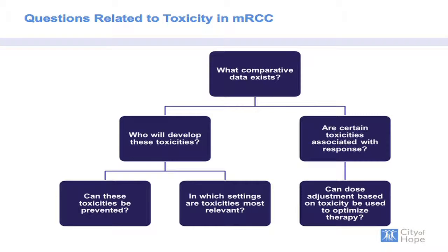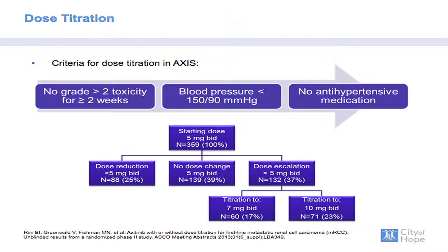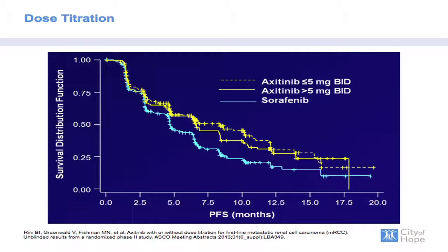If certain toxicities are associated with response, can we dose-adjust to optimize therapy? Dr. Rini and colleagues have taught us a lot through the AXIS trial. These are the criteria for dose titration within AXIS — ultimately 17% of patients were titrated to 7 mg BID and 23% to 10 mg BID. Patients at higher and lower axitinib doses had relatively similar PFS, possibly related to AUC effects in patients titrated upwards.